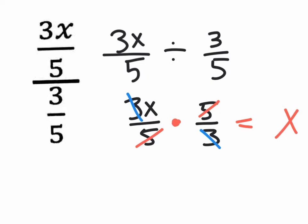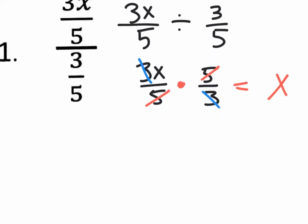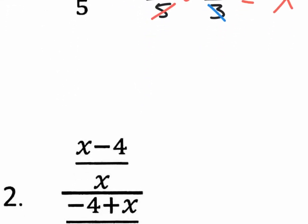It looks complicated at the start — that's why it's called the complex rational expression. It's fractions within a fraction. But if you write it horizontally, it becomes a lot easier.